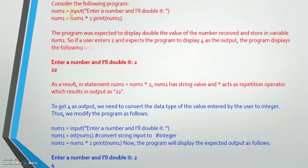Consider the following program: num1 has an input 'enter a number and I will double it.' So we are going to enter a number, for example 2, and it will be doubled. The program uses num1 multiplied by 2 and then prints num1. The program was expected to display double the value — so if a user enters 2, the expected output is 4.